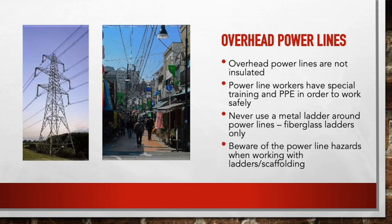Overhead power lines are a major issue. The minimum distance is 10 feet, and that increases as voltage increases. One major issue is that they're not insulated — coming into contact with them, you become part of that system. Power line workers have special training and PPE to work around them safely. Don't use a metal ladder near power lines, and be very careful with cranes, rigging, heavy equipment, and excavators — 10 feet minimum distance because they can arc to you if you're working with conductive material.